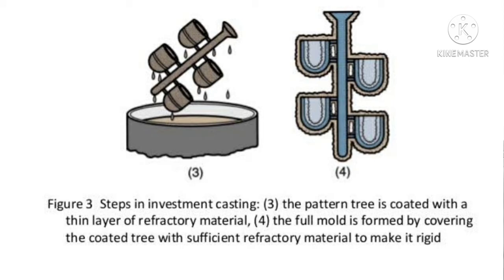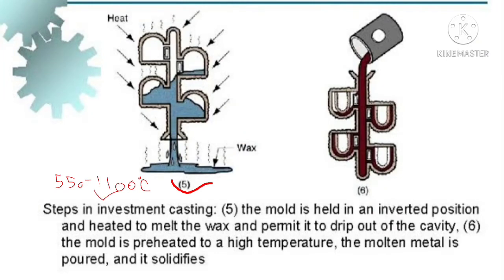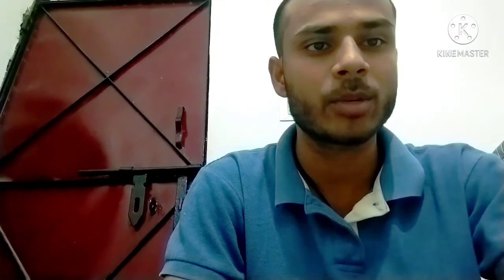The fifth step comes after pre-heating. We heat it again after some time in the final heating stage. The temperature in the final heating is 550 to 1100 degrees Celsius. The wax melts out completely, and the pattern becomes only the slurry shell.